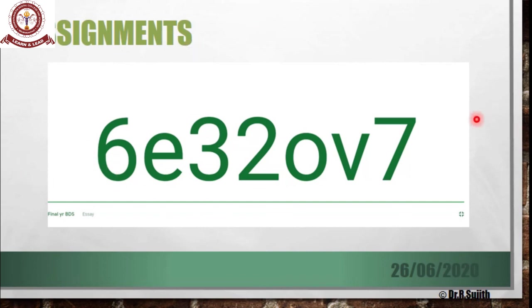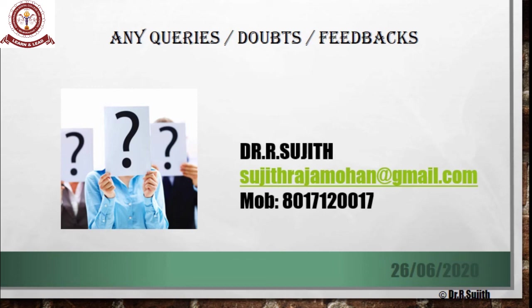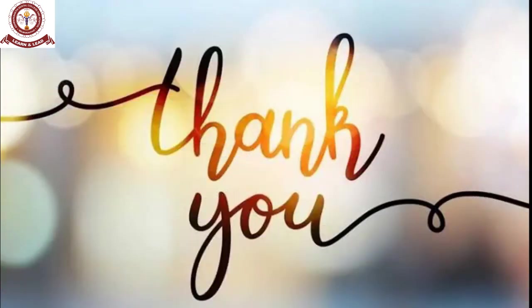The assignment link for Google Classroom is provided — students must enter and submit with their name and roll number for easy grading. Anyone not following proper guidelines will be marked absent. For any queries, doubts, or feedback, students can contact via the given phone number or email ID.